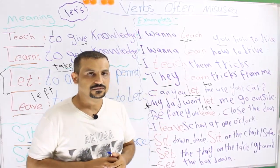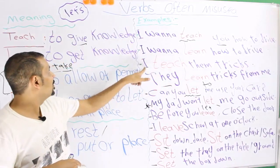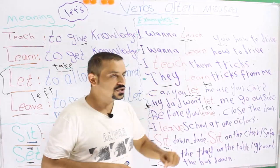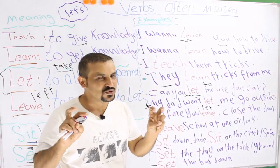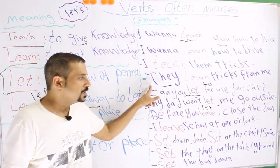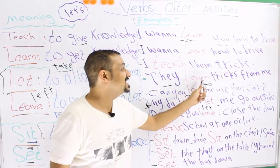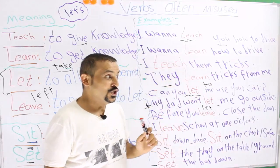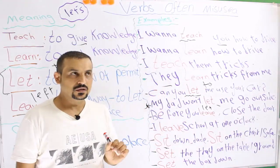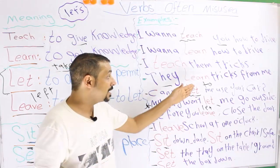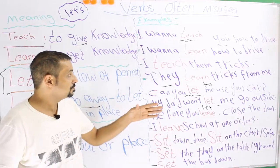For example: 'I teach them tricks.' Teach who? Teach them. I am giving the knowledge, so I use teach. 'They learn tricks from me.' I can't say 'they teach tricks' — with teach, you always teach someone. In Arabic we can say 'learn dad,' but in English we can't, and that's why we make mistakes. All the time with teach, you're giving knowledge; with learn, you're receiving knowledge. So you can't say 'I learn Abdullah how to drive' — it should be 'I teach Abdullah how to drive.' Learn doesn't take an object.